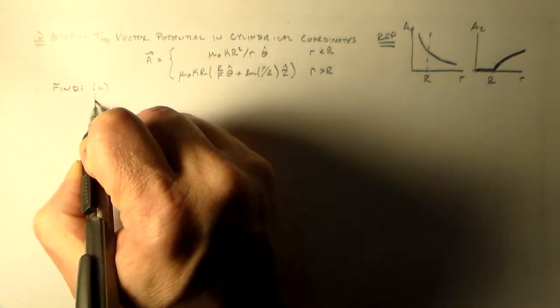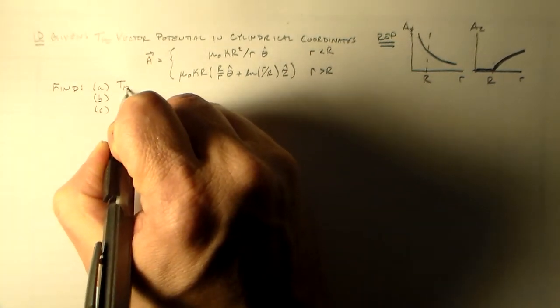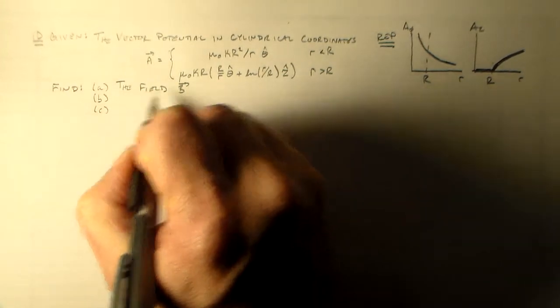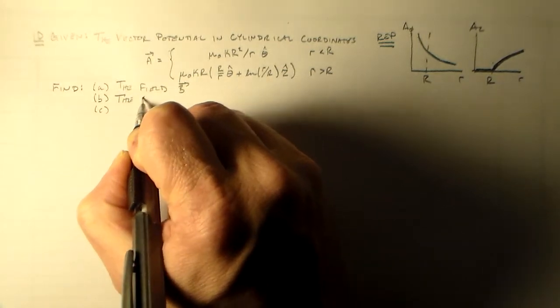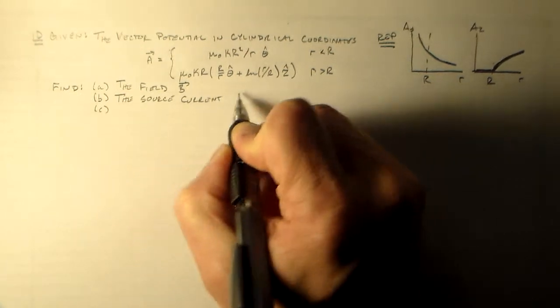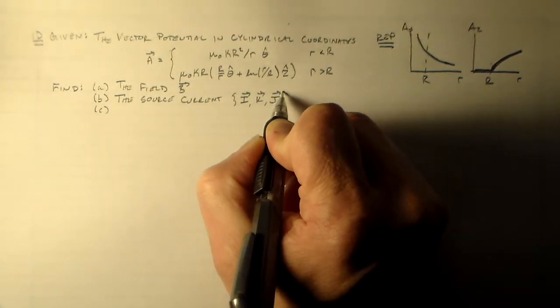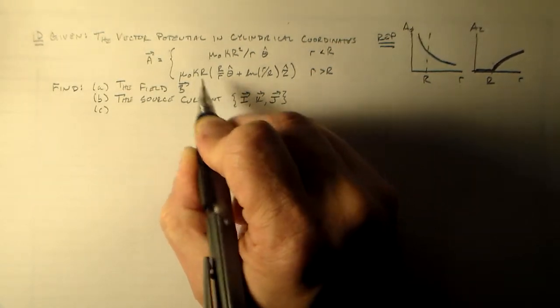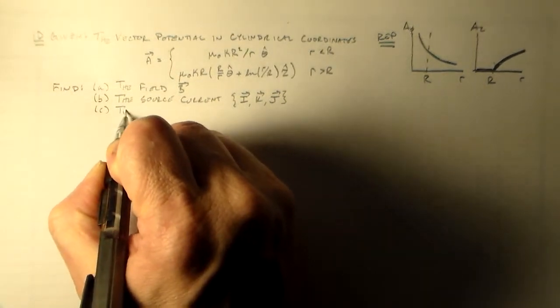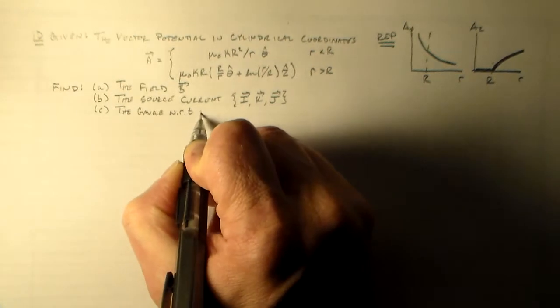This is going to be one of these things where I go through and find many things. First thing I want to find is the magnetic field B. Then I want to find the source current, that could be I, K, or J. I bet you can guess what it's going to be, but we'll figure it out as we go along. And see the gauge with respect to the previous problem.